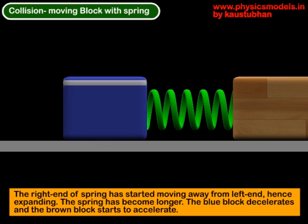Now in this final stage, the blue box is decelerated a lot, and energy transferred to the brown box makes it accelerate, and it moves away, and that causes the expansion of the spring.